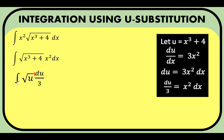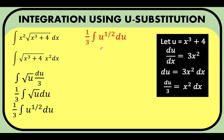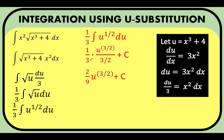We pull out 1 over 3 outside the integral symbol, giving us one-third times the antiderivative of the square root of u du. Rewriting the square root of u as u raised to one-half and applying the power rule, we add 1 to the exponent to get u raised to 3 halves, divided by 3 halves, plus a constant. We simplify the complex fraction by multiplying by the reciprocal of 3 halves, which is 2 over 3. Then 2 over 3 times 1 over 3 gives 2 over 9, and we copy u raised to 3 halves plus c.